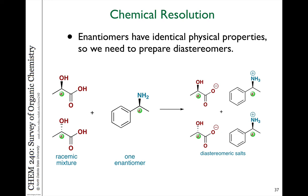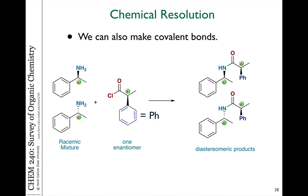That can be done with ionic bonds, as shown here, or with covalent bonds. For example, if we have a 50-50 mixture of two amines on the left, we can react that to form a covalent bond to something else which is a pure single enantiomer, and now we can make two different diastereomeric products that hopefully have different enough physical properties to separate them. That is what we refer to as chemical resolution of enantiomers. I wanted to introduce this to give you an idea about what we do as chemists.